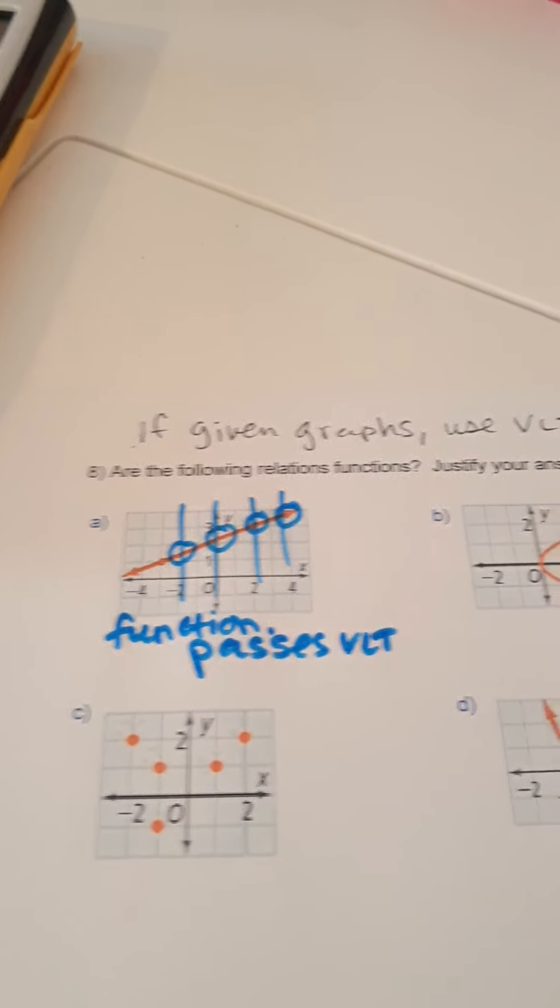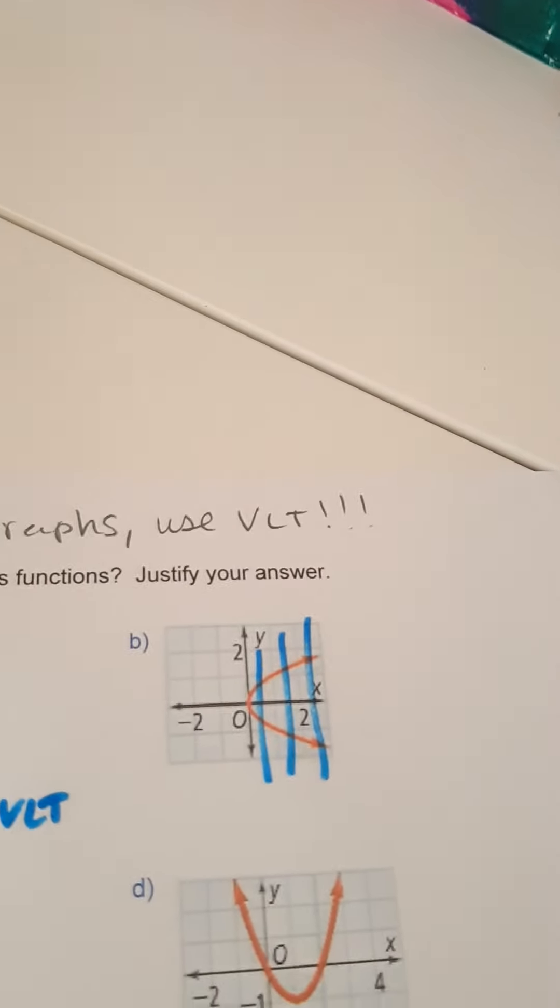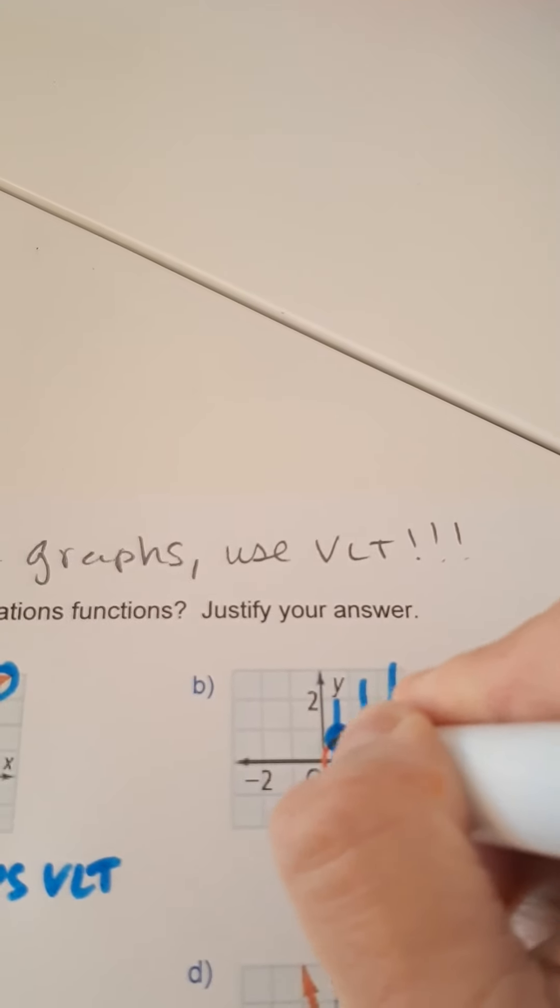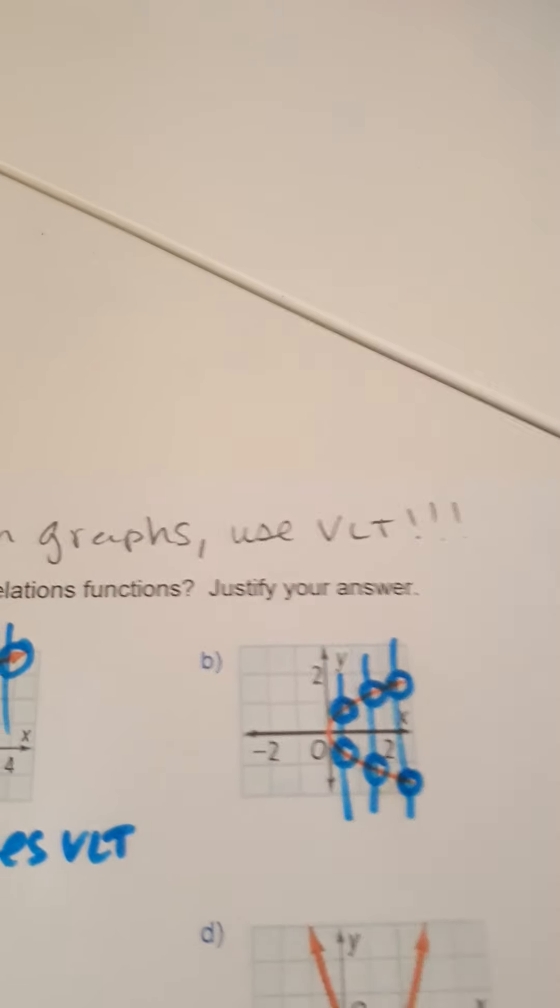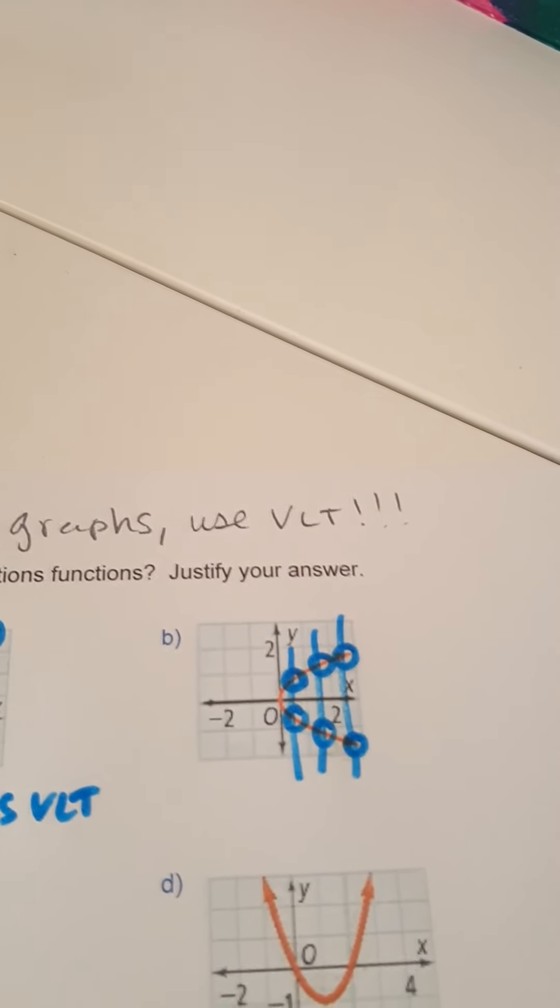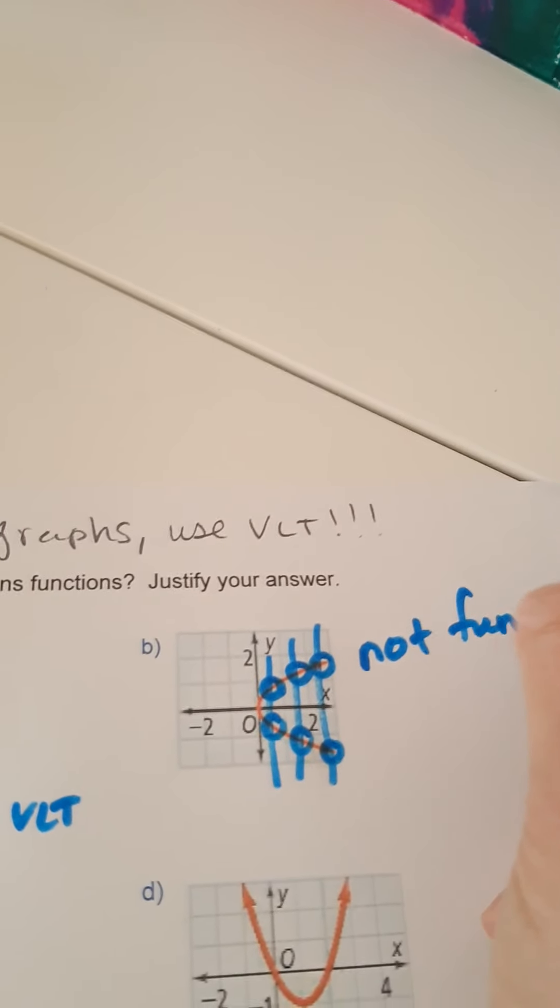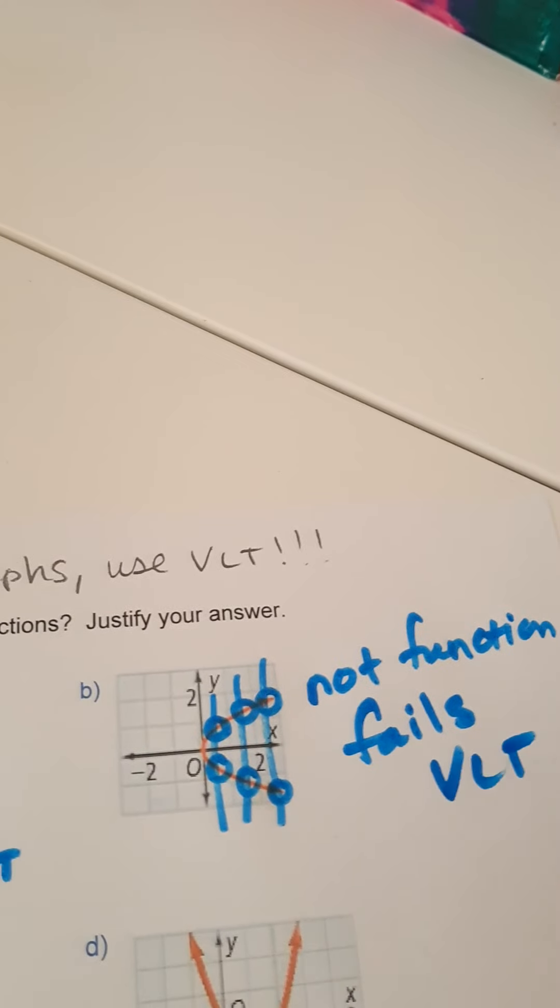And now I'm writing in blue. Okay. You can draw as many vertical lines to test the vertical line test as you want. But this vertical line touches twice. This vertical line touches twice. And this vertical line touches twice. Meaning, it is not a function, which means your X's are repeating. It fails the vertical line test.